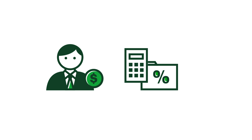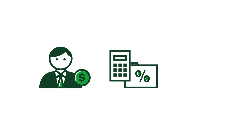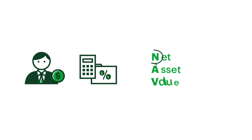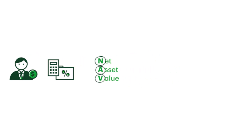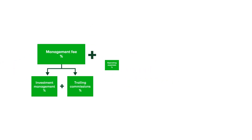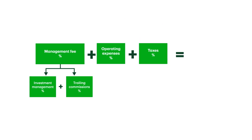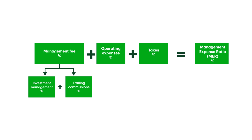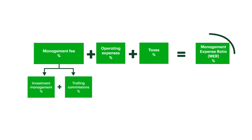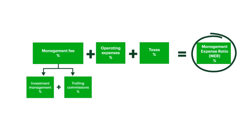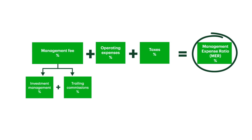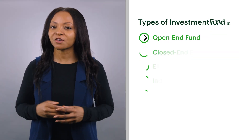This fee is typically calculated as a percentage of the assets that make up the fund. The total value of assets within a fund is known as the net asset value, or NAV. The manager's fee and other costs or expenses associated with running the fund are added together and called the management expense ratio, or MER. By identifying the MER as a percentage, investors can compare expenses between different funds.